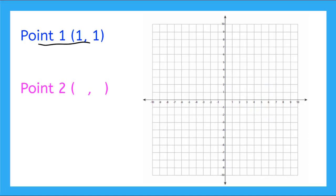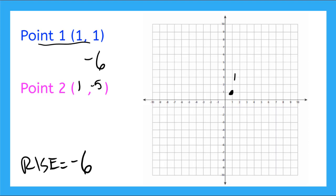I have point 1 again at (1, 1), so it lives right there. But now I have a rise equal to negative 6. Remember, rise is the distance between my two y-coordinates, and it's negative so I subtract 6 from my y-coordinate. My x-coordinate stays as 1, and my y-coordinate goes to negative 5. So I plot point 2 at (1, negative 5). My rise was negative 6, so it came all the way down — the distance between my y-coordinates is 6 downward.